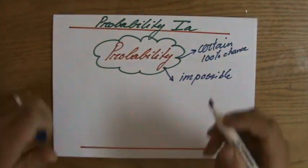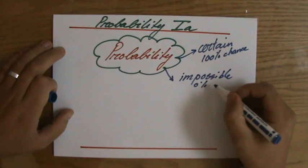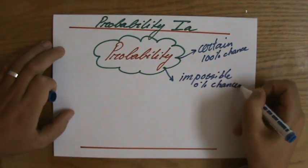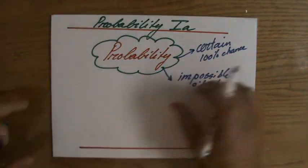0% chance, if you like, 0% chance. So certain and the opposite is impossible.